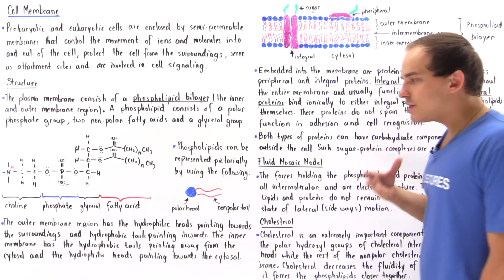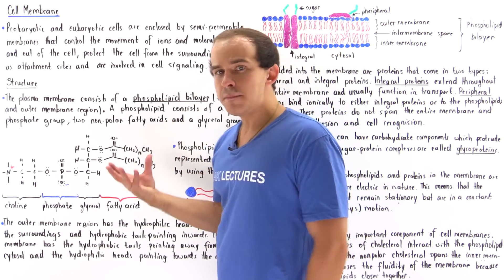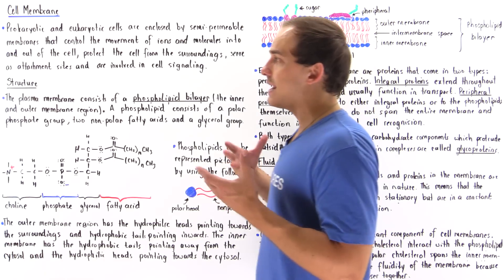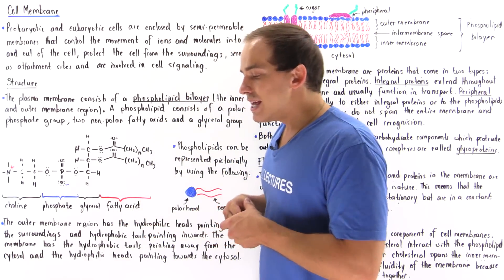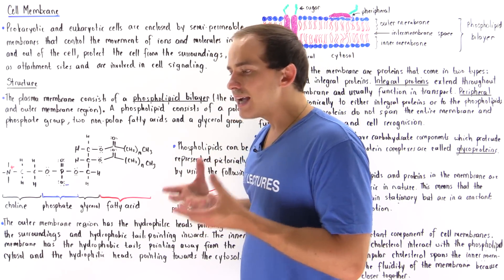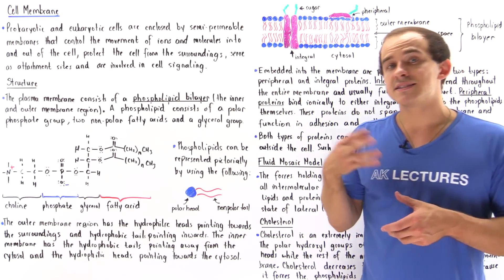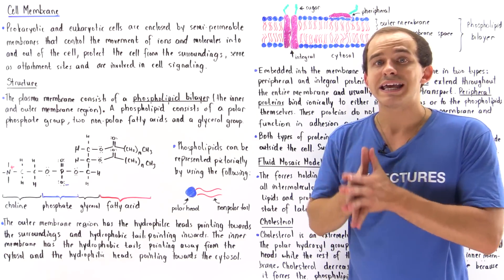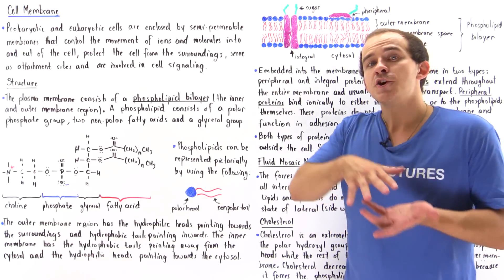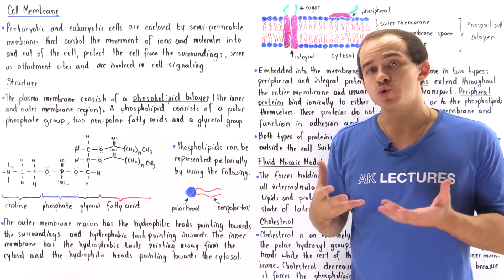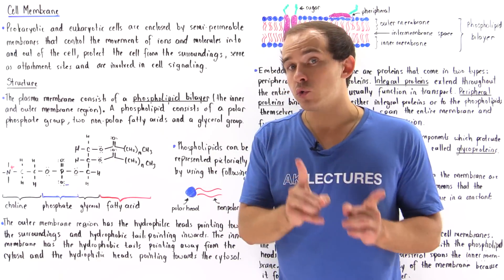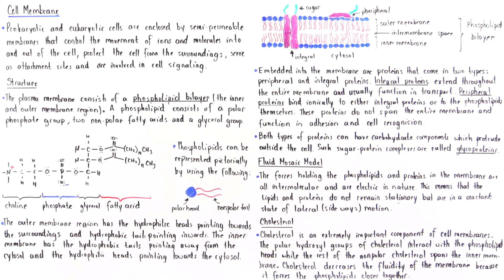How exactly do phospholipids arrange themselves inside the cell membrane to give it its bilayer structure? Before discussing the structure, we must note an important point. Inside the cell we have a fluid known as the cytosol, and most of the cytosol is water, so the cytosol is polar. The fluid outside the cell is also usually polar, and that determines how our phospholipids arrange themselves.